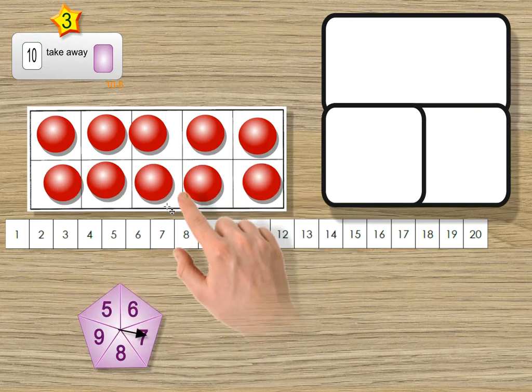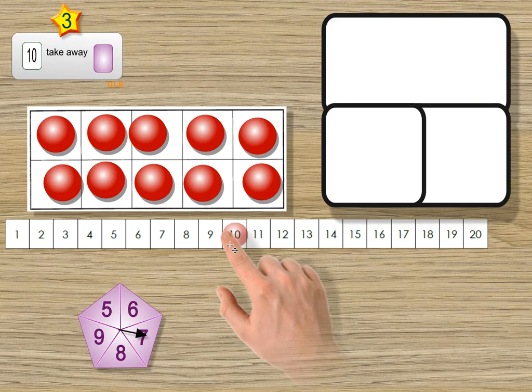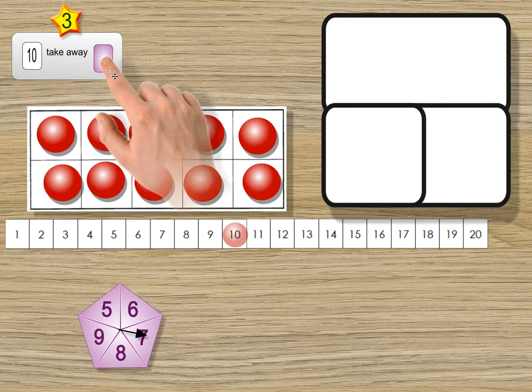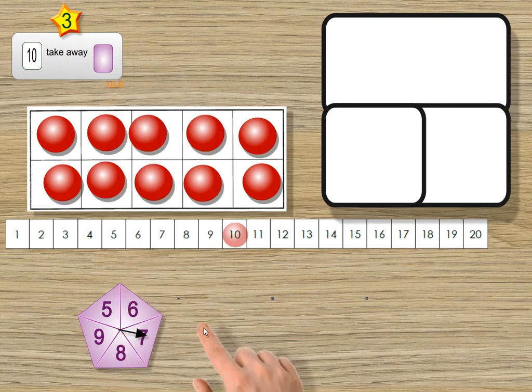So we have 10 on the tens frame, and that's why I've put this counter here on the 10. Now it says take away, which is subtract, the light purple spinner, which is this one down here. So I'll give it a spin. Let's see where we end up. Oh, what do you know? It's landed on 7.